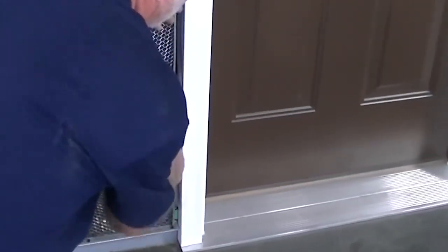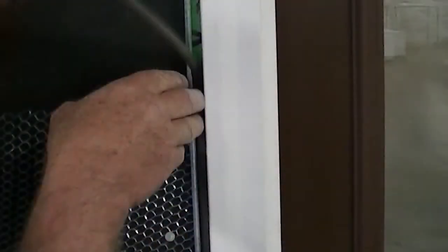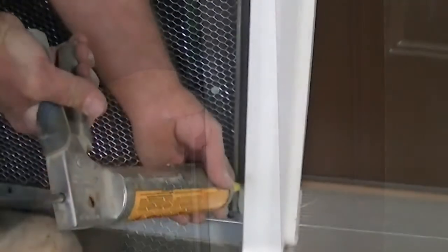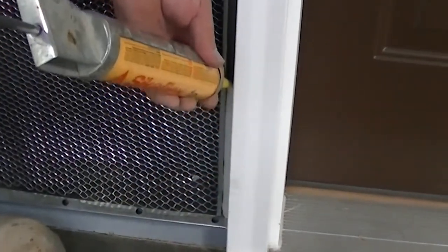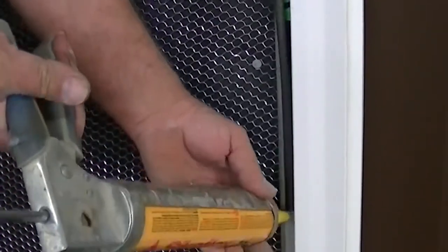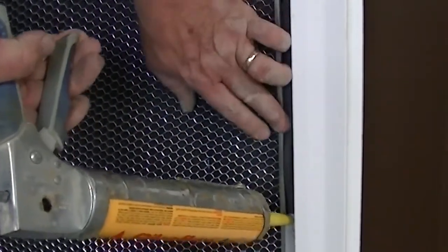When sealing around a door, run a 3-8 inch backer rod or foam rope-type seal around a 3-8 inch perimeter space. After the backer rod has been installed completely around the door's perimeter, caulk directly over the backer rod and you're ready to move on.